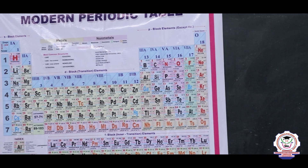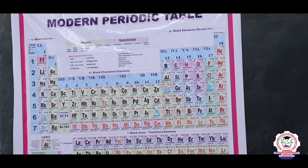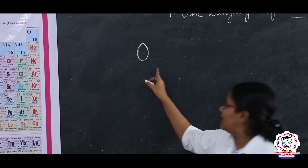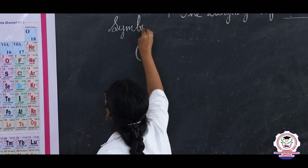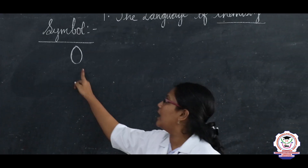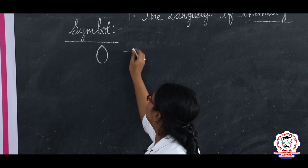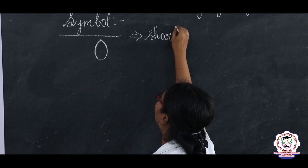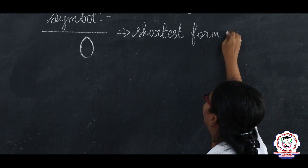I can take a simple element, for example oxygen. Why is oxygen written as O? Why not OX? This is the symbol of the element. We need to know the symbol of the element first in the language of chemistry. O is the symbol of the element oxygen. Symbol is the shortest form of an element.